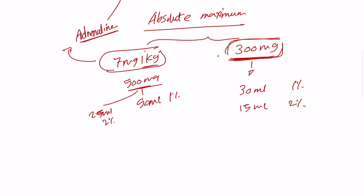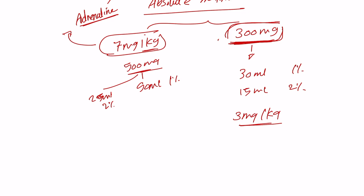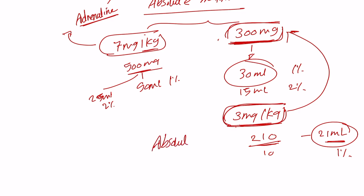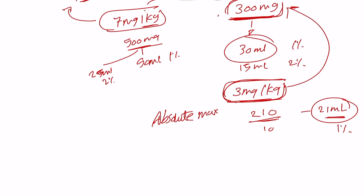If we want to express the non-adrenalized dose in per-kilogram terms, that will be 3 mg per kg. So for a 70 kg patient, that's 210 mg in total — divide by 10 and you can give up to 21 ml of the 1%. You can see there's a big difference between 21 and 30 ml, which is why it's better to calculate using 3 mg per kg rather than the flat 300 mg figure. However, 3 mg per kg is not the absolute maximum — that is 4.8 mg per kg.